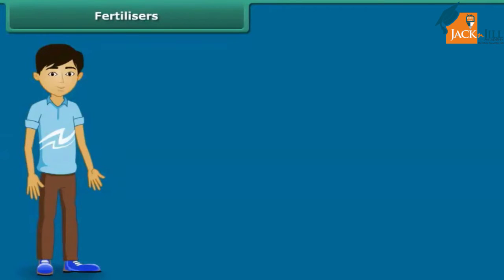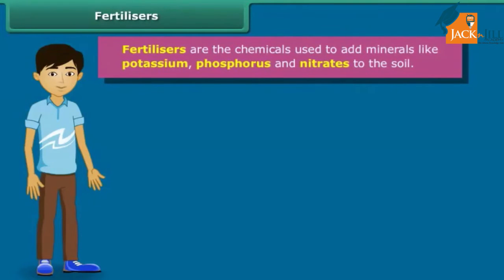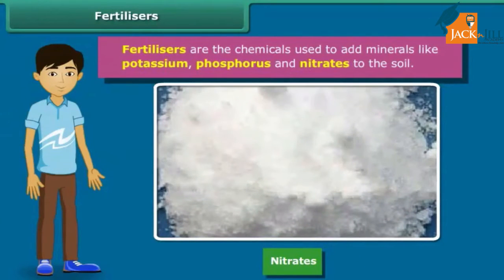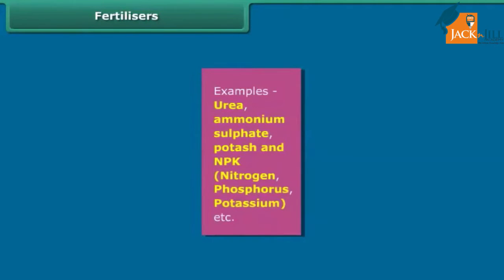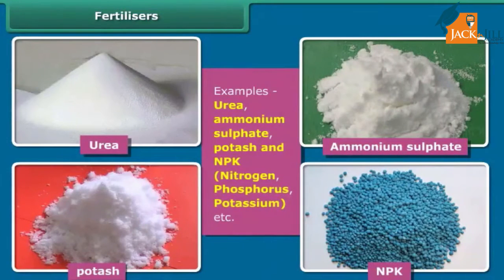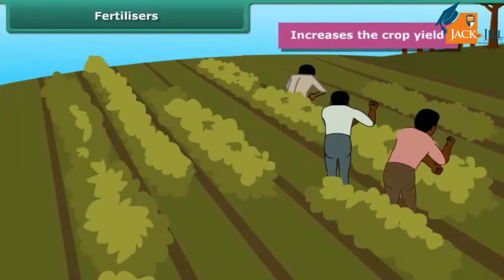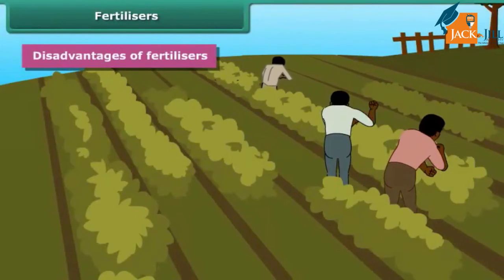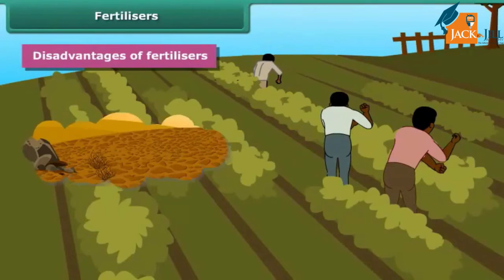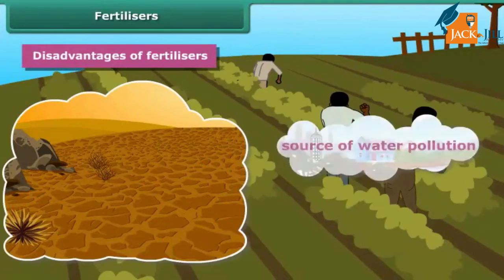Like manure, fertilizers are also used to replenish lost nutrients and minerals in the soil. Fertilizers are chemicals used to add minerals like potassium, phosphorus and nitrates. They are produced in factories; examples include urea, ammonium sulfate, potash, and NPK (nitrogen, phosphorus and potassium). The use of fertilizers increases crop yield. However, excessive use of fertilizers makes the soil less fertile and has also become a source of water pollution.